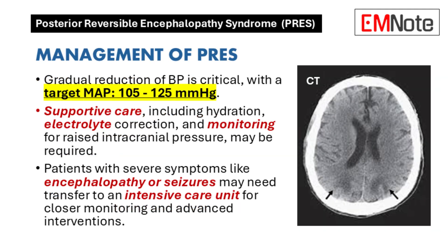The management of PRES focuses on addressing the underlying causes and stabilizing the patient's condition. Gradual reduction of blood pressure is critical, with a target mean arterial pressure between 105 and 125 millimeters of mercury, to avoid rapid drops that could lead to ischemia. Supportive care such as hydration, correction of electrolyte imbalances, and monitoring for raised intracranial pressure may be required. Many patients may need transfer to an intensive care unit for closer monitoring and advanced interventions if they present with severe symptoms like encephalopathy or seizures.